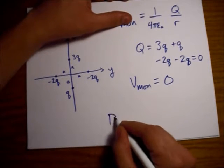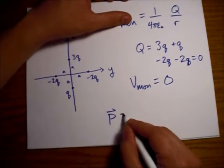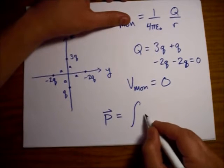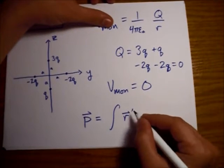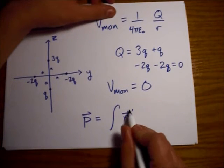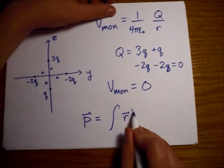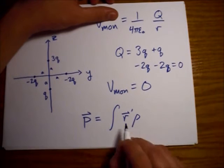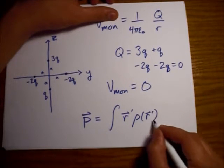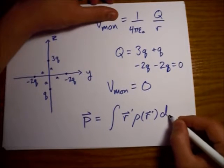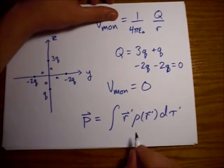The definition of the dipole moment is we're integrating over the position vector for the source point, right? The charge density as a function of that source point. And then we're integrating over the volume.